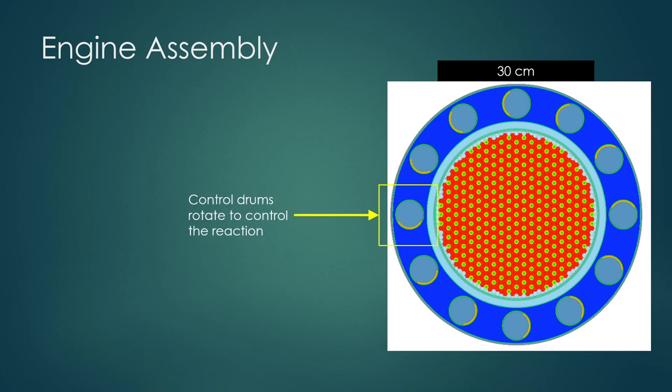Around the outside of the core here, we have these little circular things, and these are called control drums. And these are used to control the rate of the reaction. If we turn them one direction, there is a material that enhances the reactivity. So we will get more of a chain reaction. And if we turn them the other way, there's a material that will degrade the reaction. So the reaction goes down. So at the top of the core, you will need to have some sort of device that can rotate these appropriately to control the reaction.